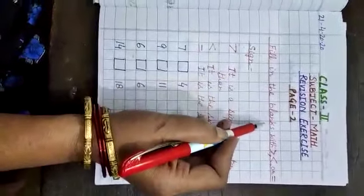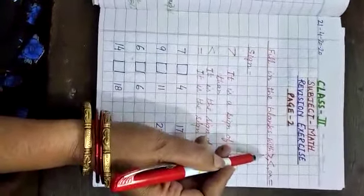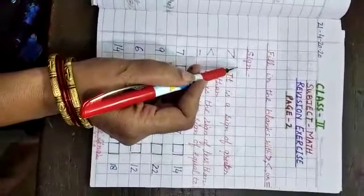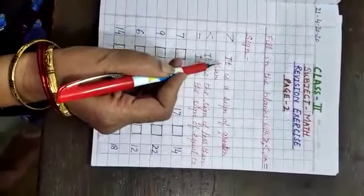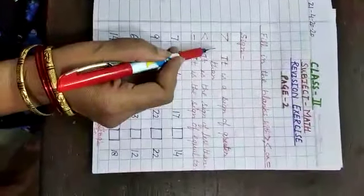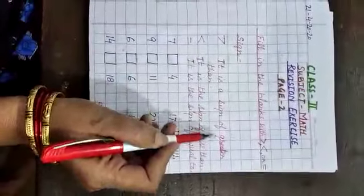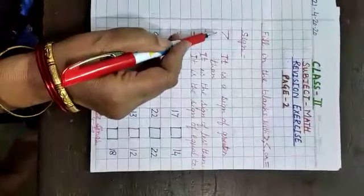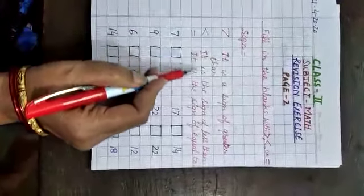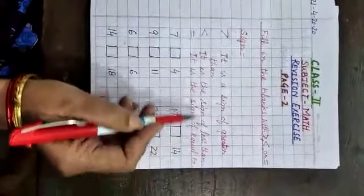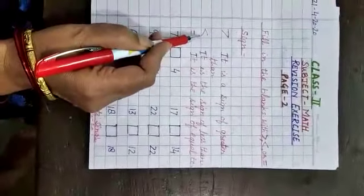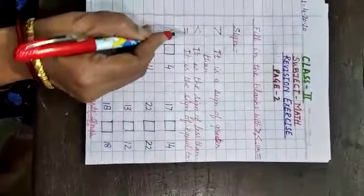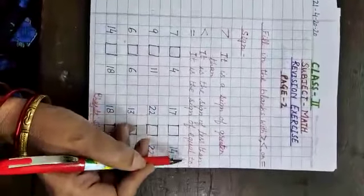Fill in the blanks with greater, less, or equal sign. I will tell you about the signs. This is the sign of greater than — it opens on your left side. This is the sign of less than — it opens on your right side. Here are two small lines — it is the sign of equal to.